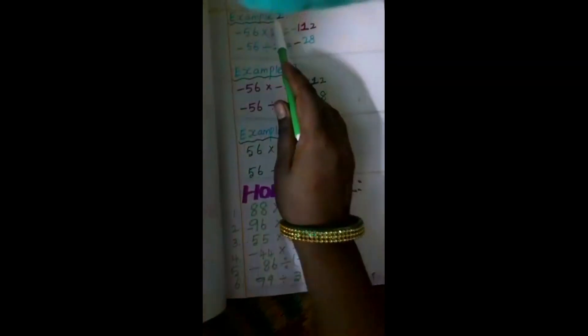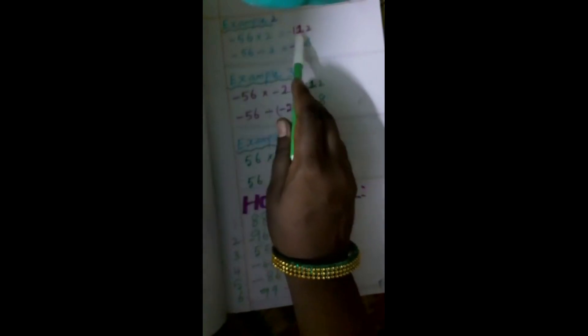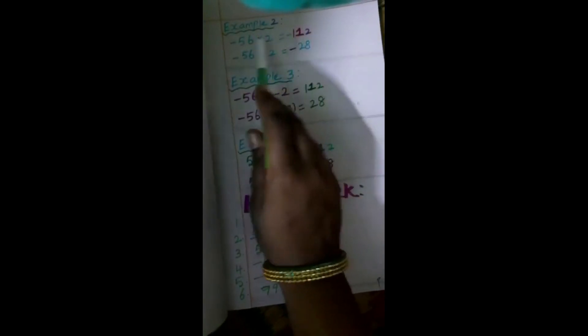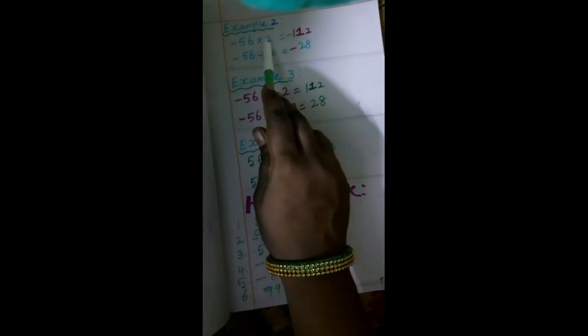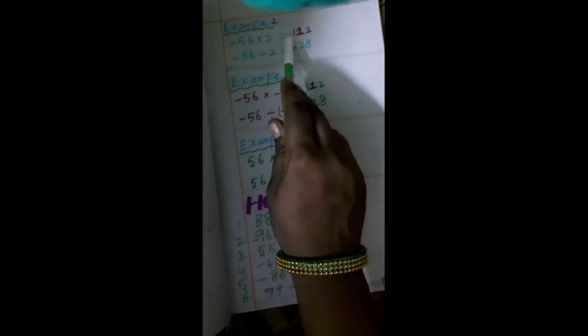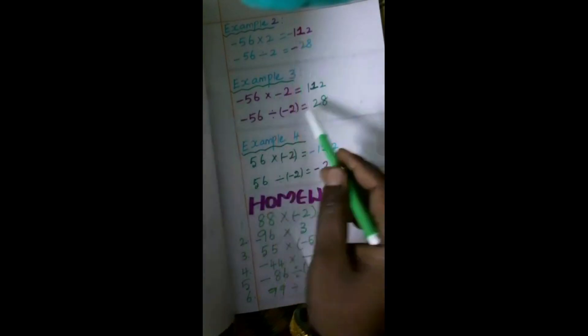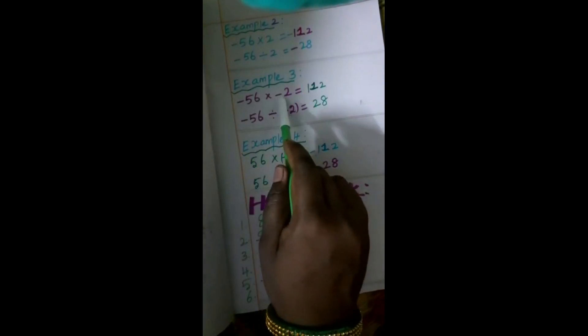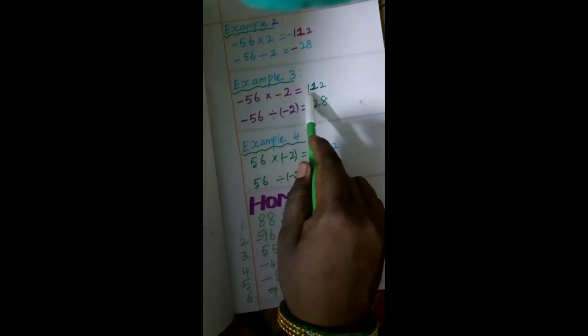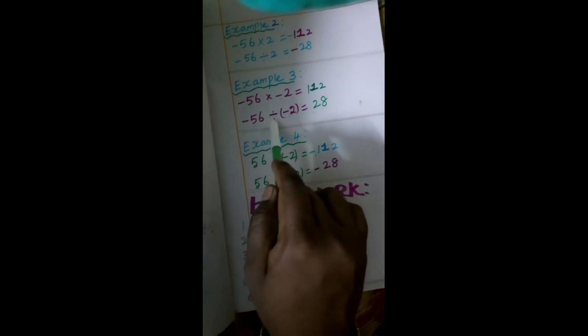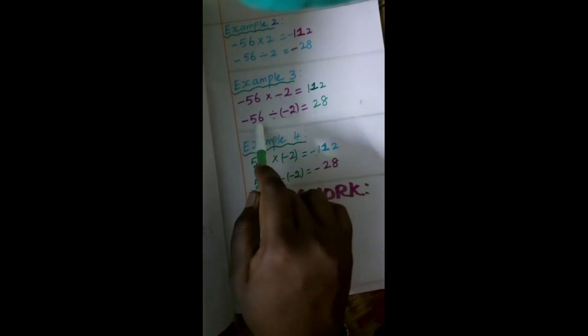Example 2: minus 56 times 2. It is a minus sign times a plus sign — a different sign — so you put minus. Minus 56 divided by 2: minus sign divided by plus — different sign — so you put minus. Example 3: minus 56 times minus 2. This sum contains the same sign, so you put plus. Minus 56 divided by minus 2 — same sign — so you put plus.